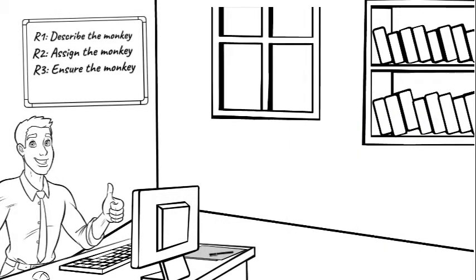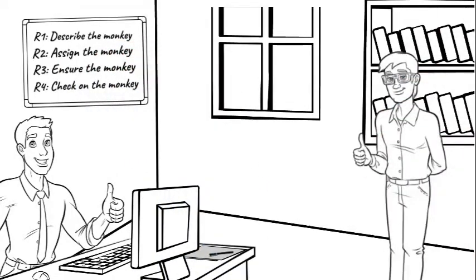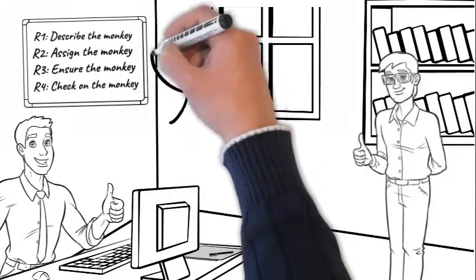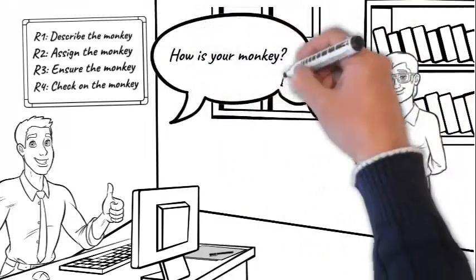Rule number four. Check on the monkey. Proper follow-up means healthier monkeys. Every monkey should have a check-up appointment. The monkey needs an appointment, not for control but for celebrating success and coaching.